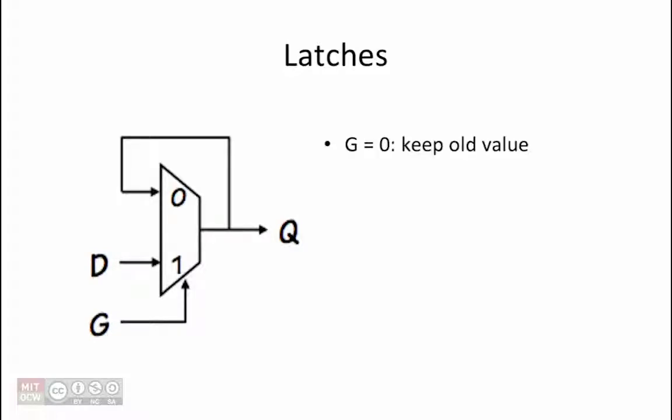The way the latch works is that when g equals 0, the old value of q is fed back through the multiplexer so it retains its old value. When g equals 1, the multiplexer selects d as the input so q gets updated to be the value of d.